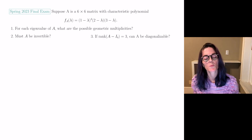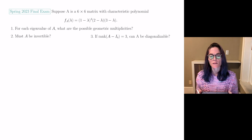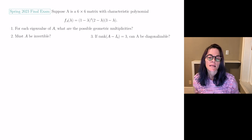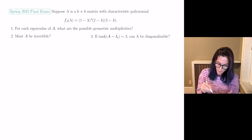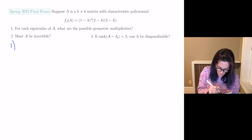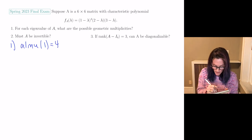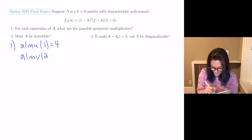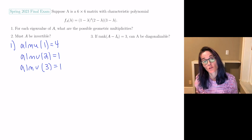Next question. This came off the spring 2023 final exam. A is 6 by 6 — we could have figured that out from the characteristic polynomial. Here is our characteristic polynomial. We have three eigenvalues for A: the algebraic multiplicity of 1 is 4, the algebraic multiplicity of 2 is 1, and the algebraic multiplicity of 3 is 1.